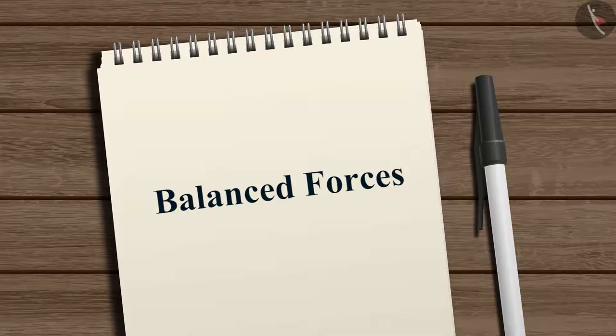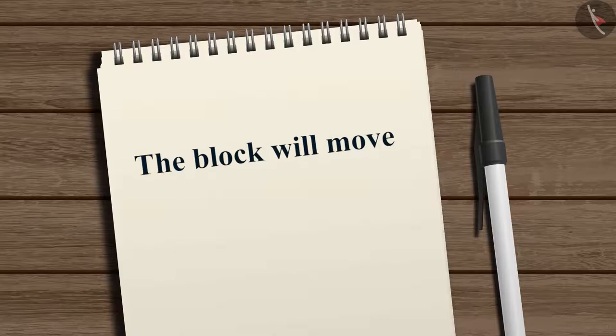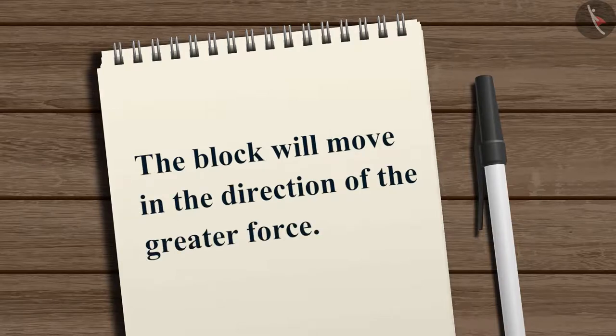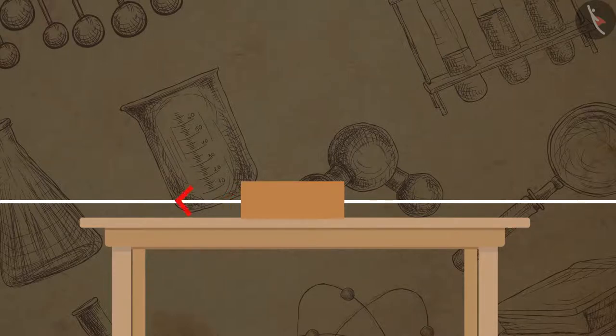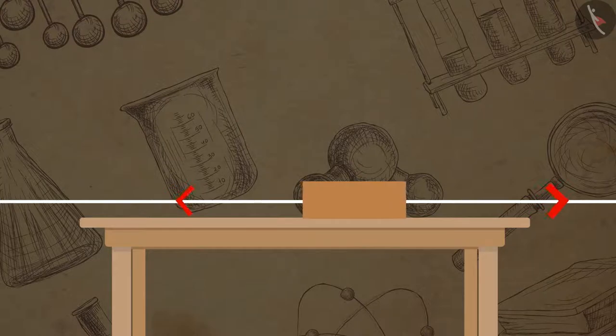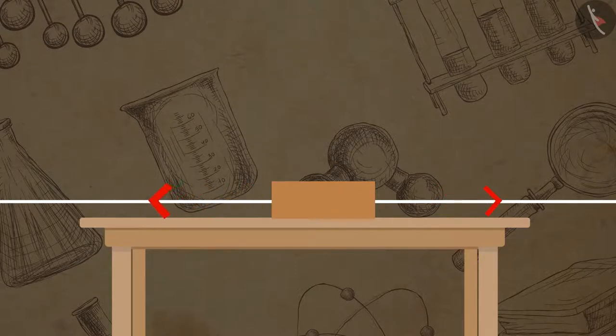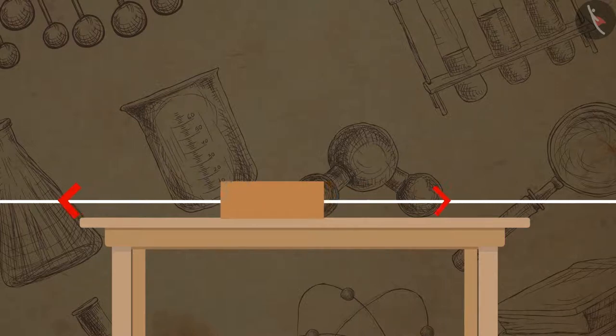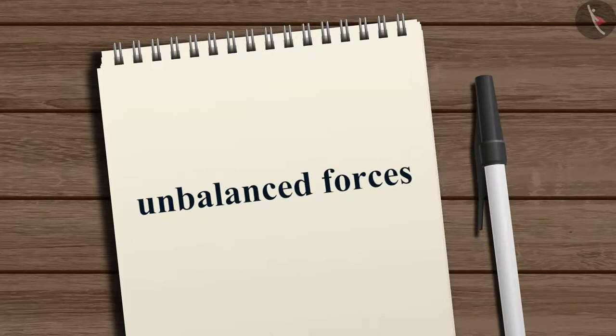Now what if we pull both the strings with unequal forces? Will the block still remain at rest? In this case, the block will move in the direction of the greater force. If the block is pulled by the right string at a greater force than that of the left string, the extra force on the right string will cause the block to move towards the right. Similarly, the block will move towards the left if the pulling force on the left string is greater than the right string. Such forces are called unbalanced forces.